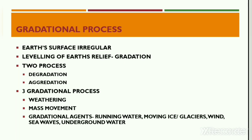This leveling up of the earth's surface is done by either reducing the highlands or filling up the lowlands. The reduction of highlands is termed degradation, and the filling up of the lowlands is termed aggradation. Gradation is generally done by various agents termed as gradational agents. There are five major gradational agents: running water, moving ice or glaciers, wind, sea waves, and underground water.